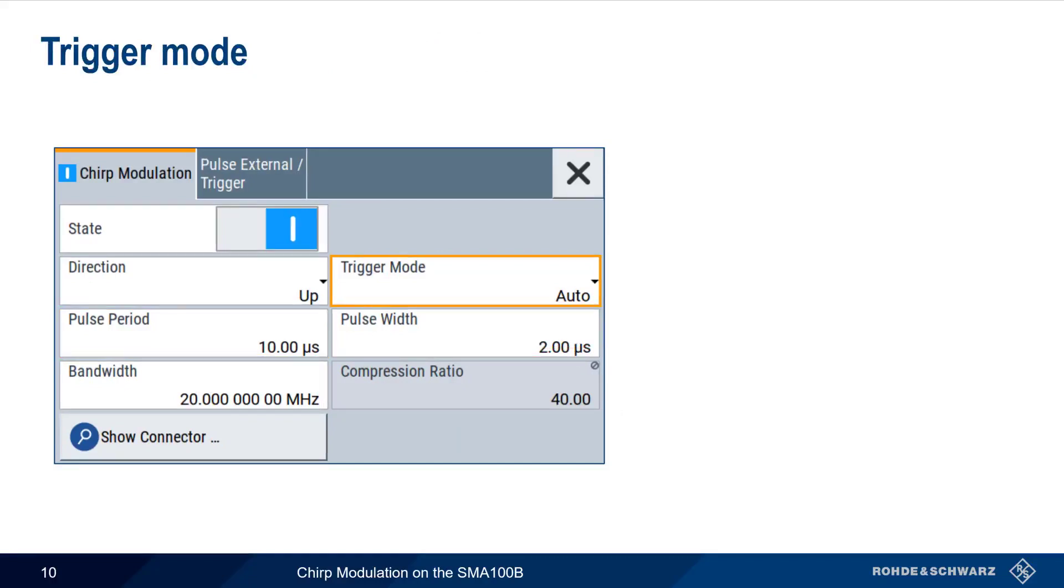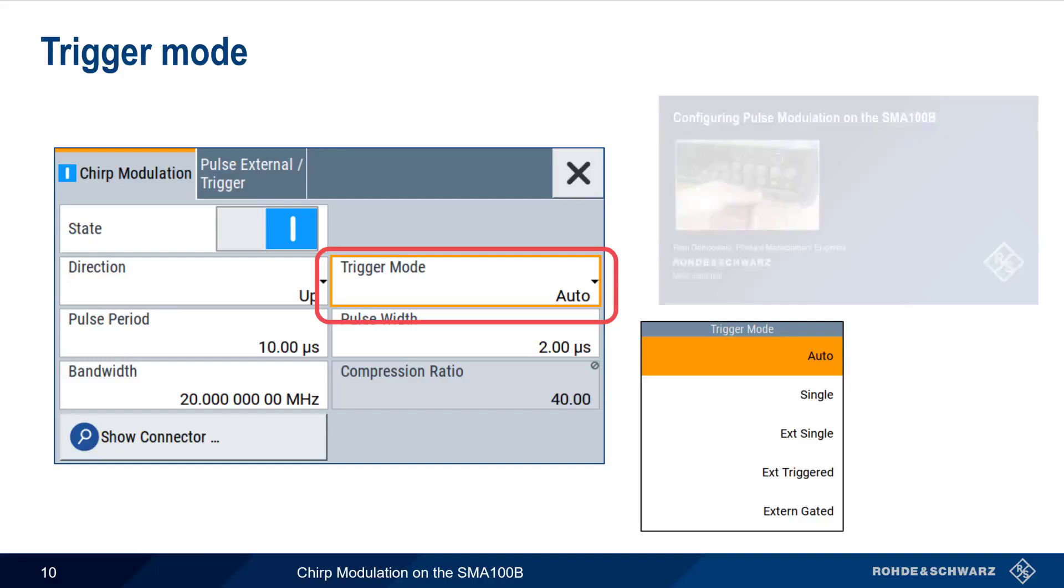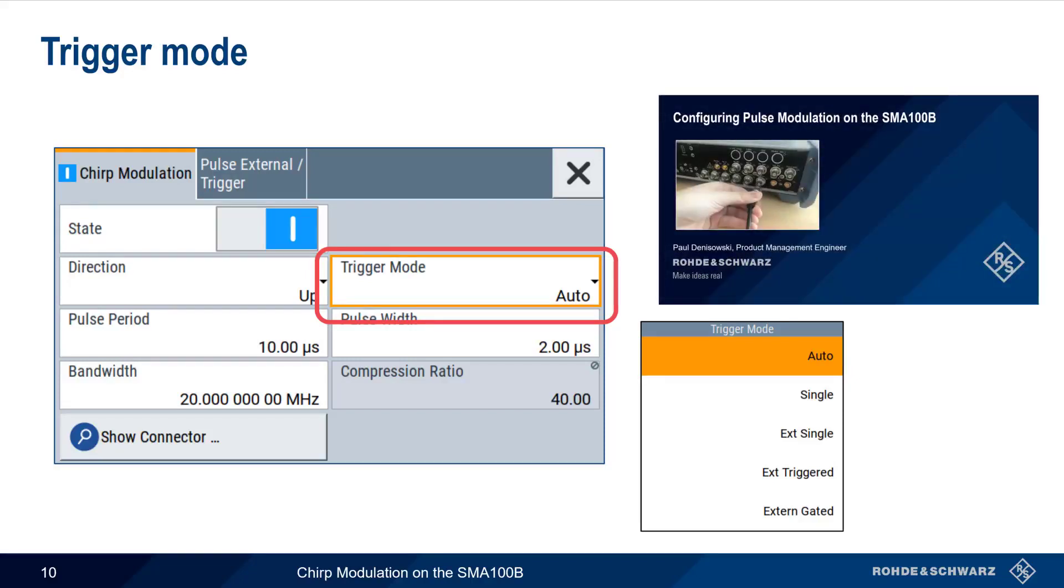The last parameter to configure is the trigger mode. In the default auto mode, chirp pulses are generated continuously, without any external signals or user intervention. Other trigger modes allow the SMA to send chirp pulses only in response to a manual or external stimulus. Please refer to the presentation, Configuring Pulse Modulation on the SMA 100B, for detailed instructions on how to configure these additional trigger modes.